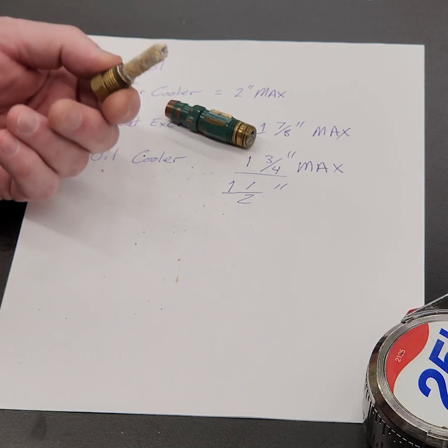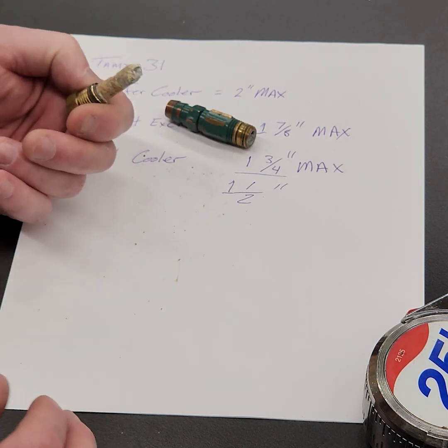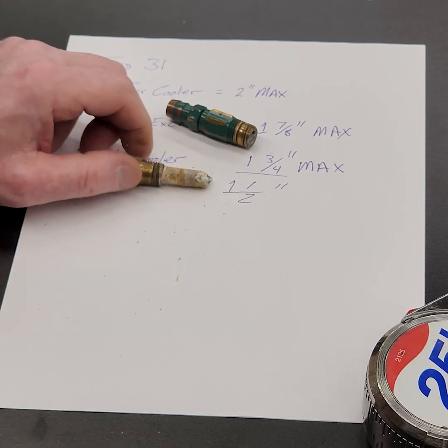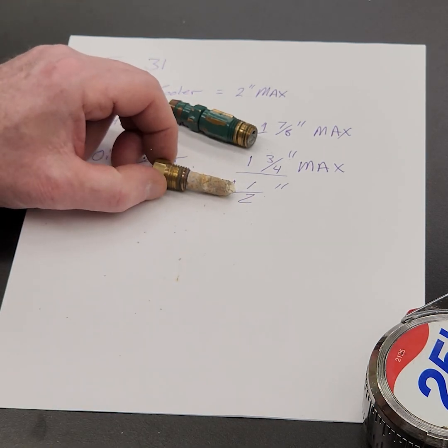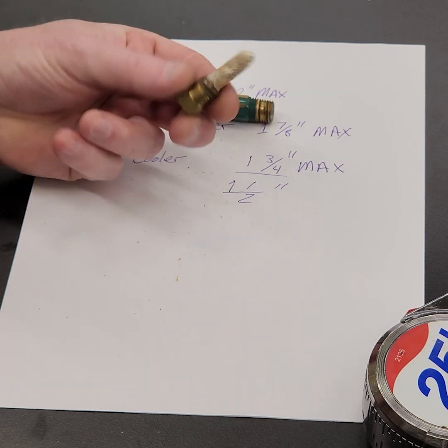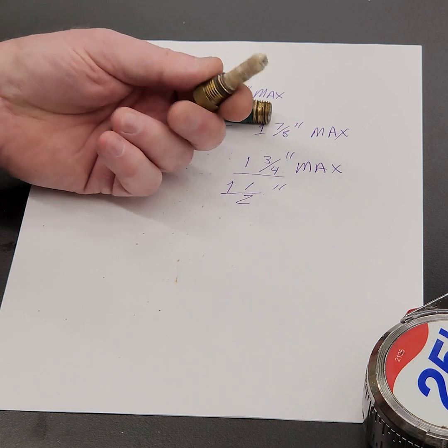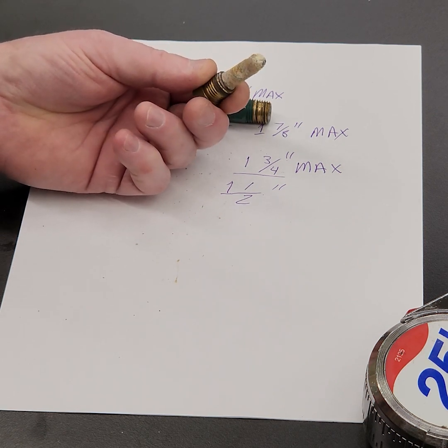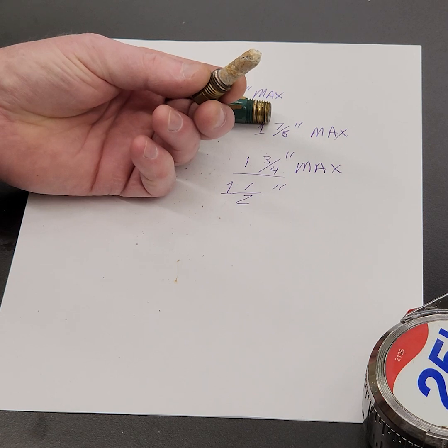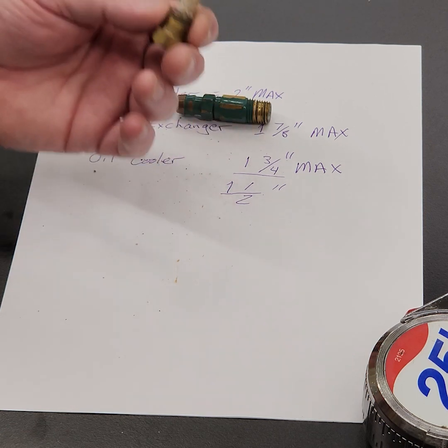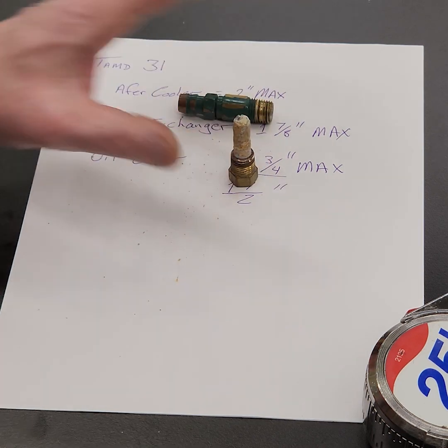A little bit of Teflon tape on the threads and just lightly seat these. So what I always say is I always turn these in until they get snug. And then I do a quarter turn, no more than a quarter turn. So do not crank these in tight with a wrench. Just bring them in until they're snug, until they just start to get snug. And then no more than a quarter of a turn. Because you don't want to split the housing. That's another thing that novices will do.